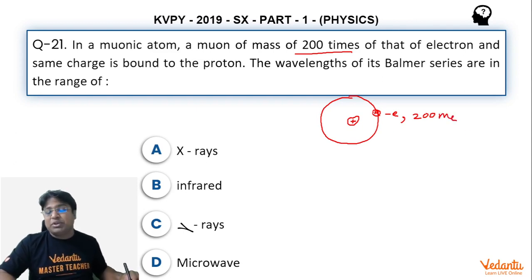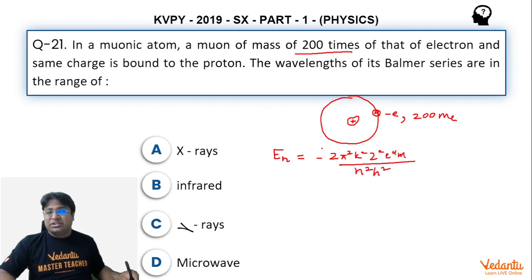Now what will be the consequence? Let's try to understand here. If we write the expression of energy of electron in the nth orbit, it is somewhat like minus 2π² k² z² e⁴ m by n² h². So it is somewhat like this.